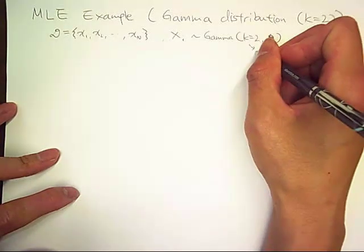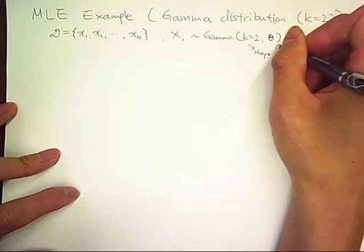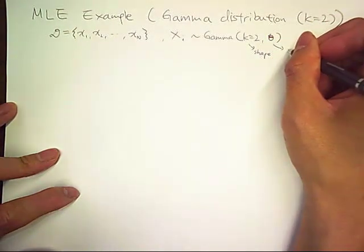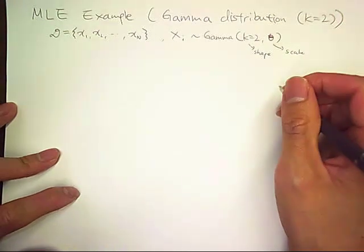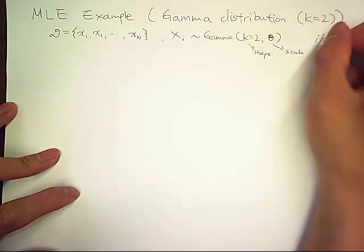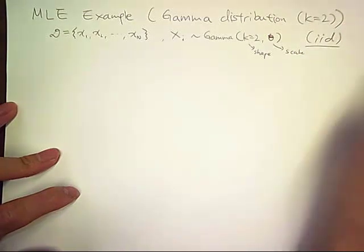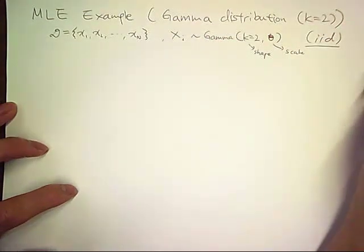So k is a shape parameter of gamma distribution. Then beta is a scale parameter. And also we'll have IID assumption that samples are independently drawn and identically distributed.